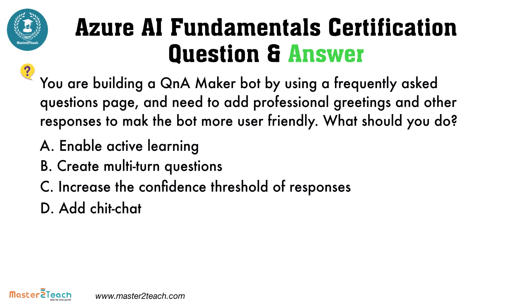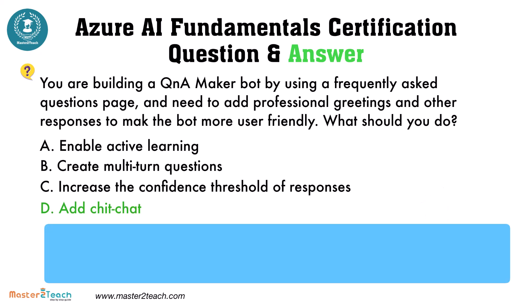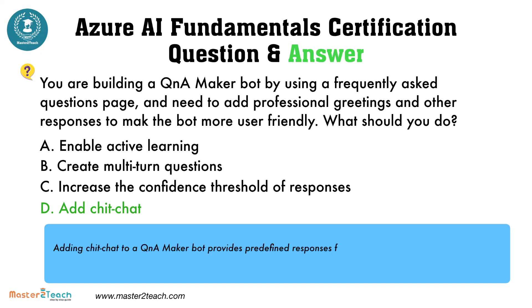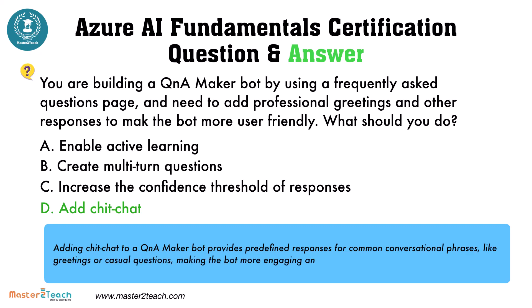The correct answer is: add chit-chat. Adding chit-chat to a Q&A maker bot provides predefined responses for common conversational phrases like greetings or casual questions,